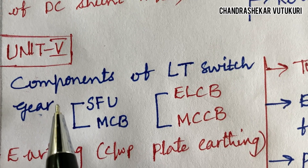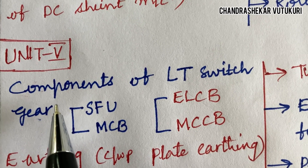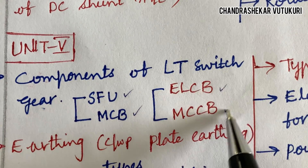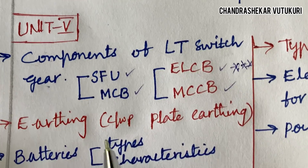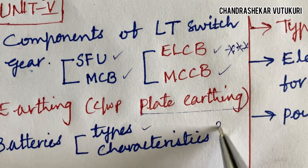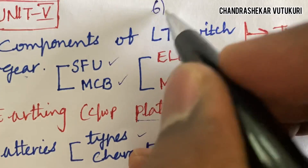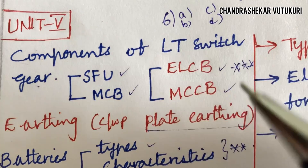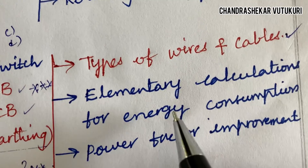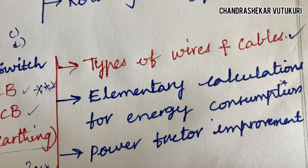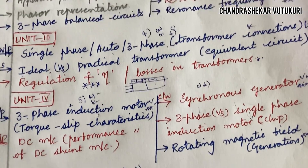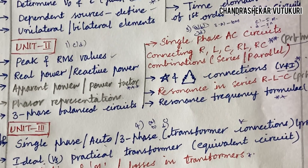The last unit is very short and average students can start with this unit first. Components of LT switchgear — SFU, MCB, ELCB, and MCCB — may be short as well as long questions. Earthing: define the term earthing and the construction and working principle of plate earthing. Batteries — their types and characteristics — may also be short and long questions forming part of 6AB and CD combination. Types of wires and cables may be a short question, elementary calculations for energy consumption may be a long question, and power factor improvement is also included.